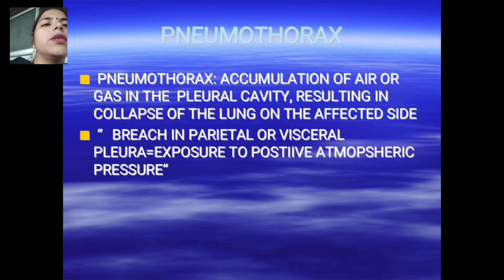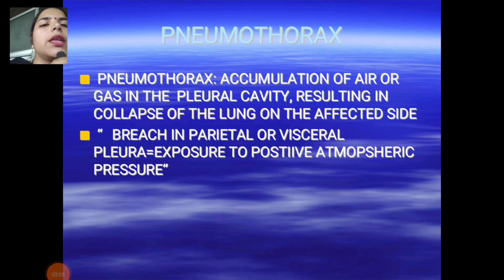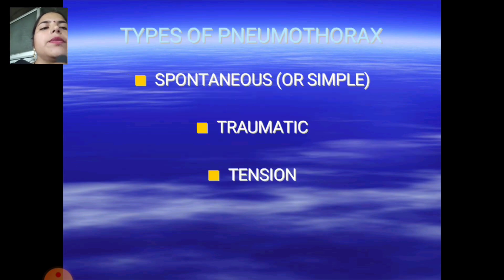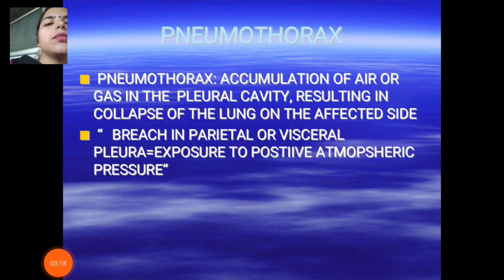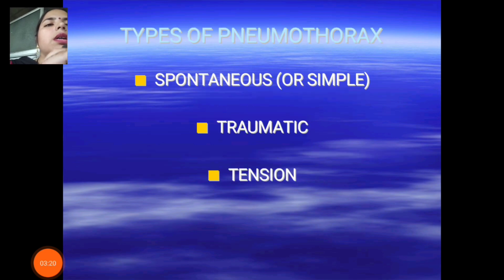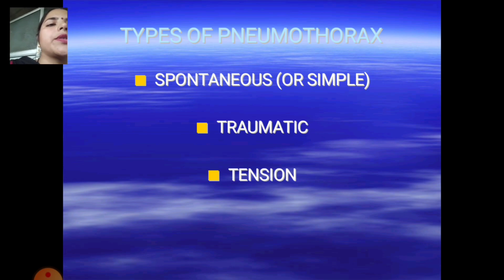Next is pneumothorax — defined as the accumulation of air or gas in the pleural cavity, resulting in collapse of the lung on the affected side. It involves a breach in the parietal or visceral pleura with exposure to positive atmospheric pressure. Types include spontaneous or simple, traumatic, and tension pneumothorax.